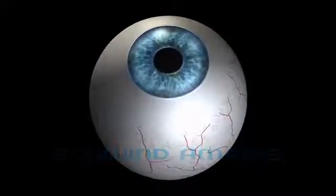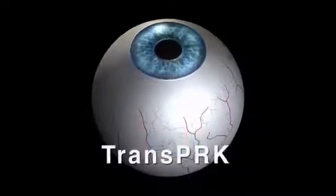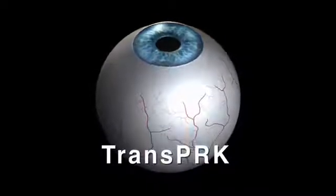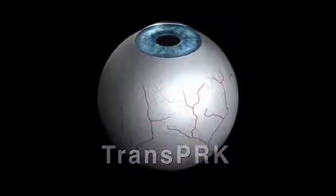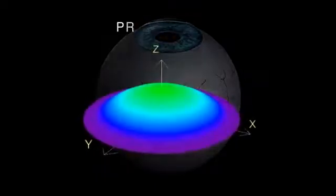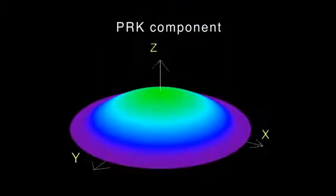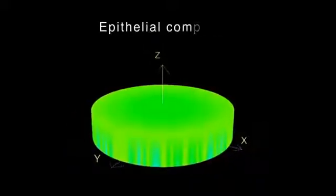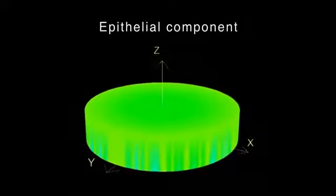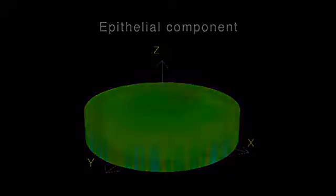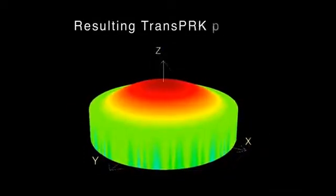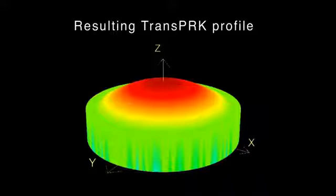The Schwind Amaris laser systems provide a sophisticated approach to carry out no-touch all-laser surface ablations. TransPRK treats refractive errors by superimposing an aspheric ablation profile with a defined epithelial thickness profile based on literature values and mean epithelial profiles of large-based populations.